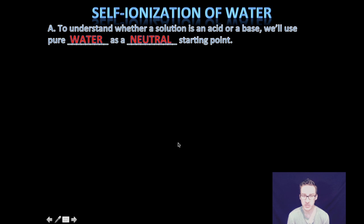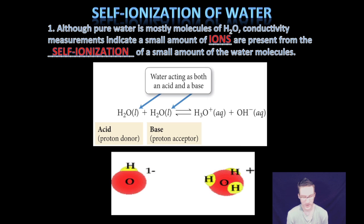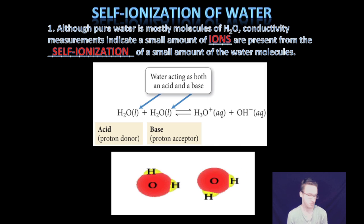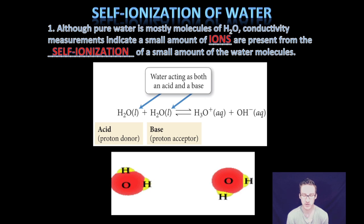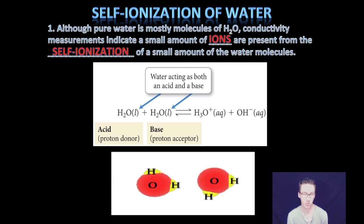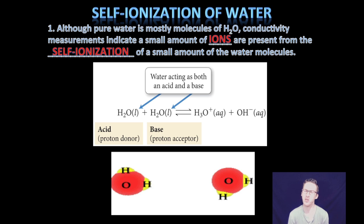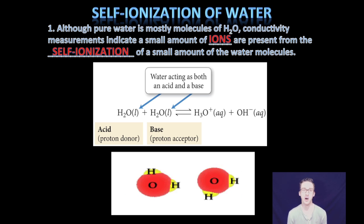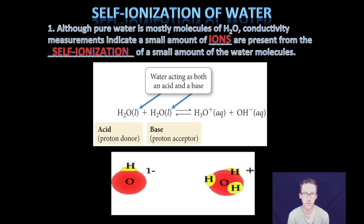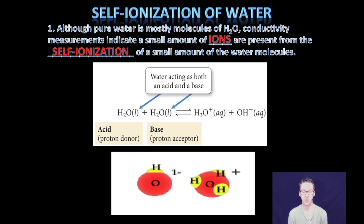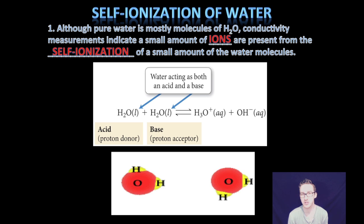So first we are just going to start with water as a neutral starting point. As we try to better understand how we define something as an acid or base, we are going to start with water, our neutral starting point. What does it mean that water is neutral? It turns out that although pure water is mostly molecules of water, conductivity measurements indicate there is a small amount of ions present in pure water that come from the self-ionization of a small amount of the water molecules. Some of the water molecules self-ionize — they turn themselves into ions.